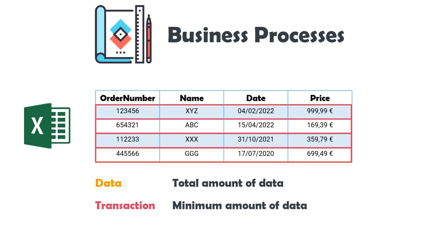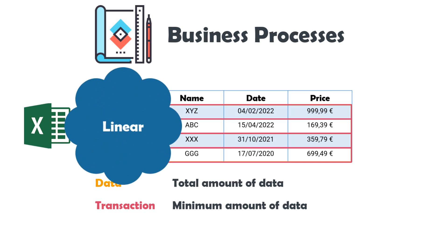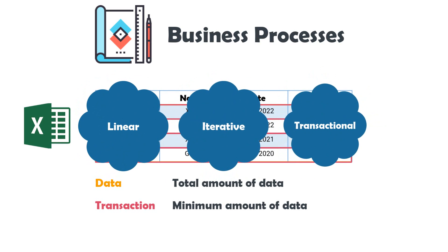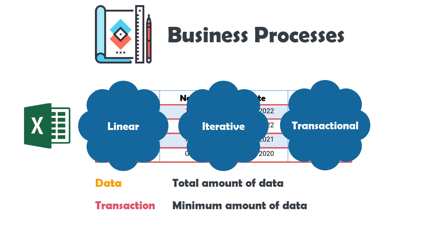Depending on the data, we can categorize the process using three different types: linear, iterative, and transactional. What does each one mean and what are the advantages and disadvantages of each one? Let's learn more about it.